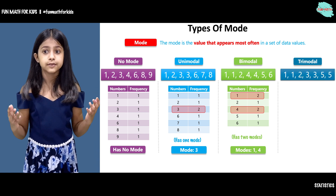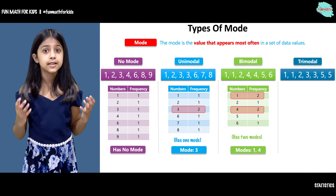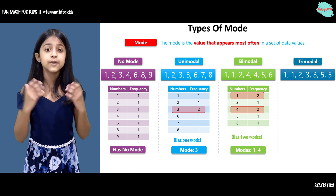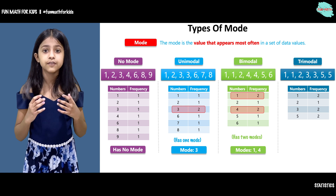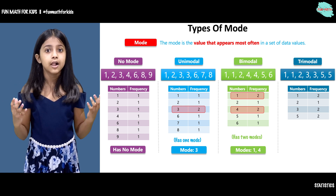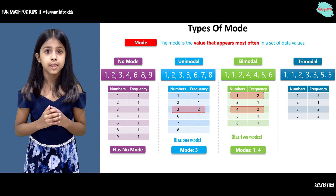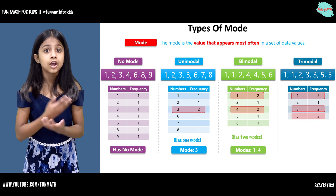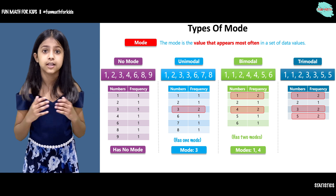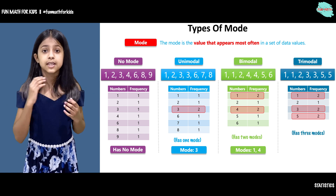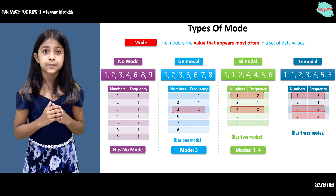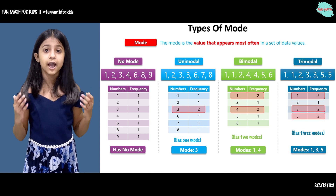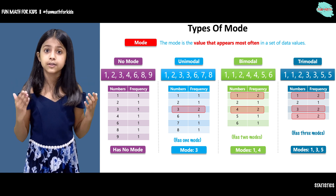Now let's move on and talk about trimodal. Here we have a data set with numbers 1, 1, 2, 3, 3, 5, and 5. Here we have a frequency table. 1, 3, and 5 have appeared twice in the table, and 2 has appeared only once. So what is the mode here? The mode is 1, 3, and 5, because those are the three numbers that appear most often in this data set. That is why this data set has three modes — 1, 3, and 5. Since we have three modes, we call this trimodal.